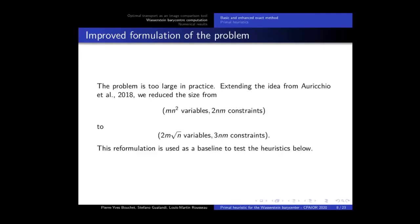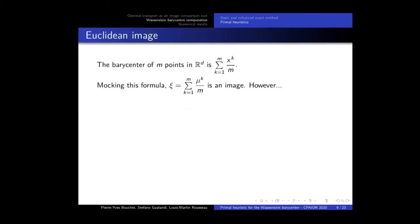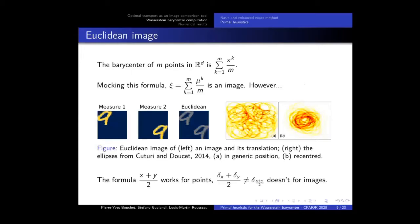The simplest heuristic we can think about is the Euclidean one. We use the formula to compute the barycentre of n points, and mock it directly for images. It is very fast to compute, but however, it does not work at all. As you see, the barycentre is not sharp at all, because the mass is spread everywhere, so the barycentre does not represent anything. There is a need for better heuristics.